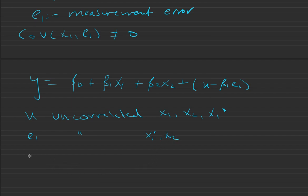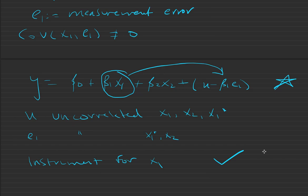We can instrument for x1 to help us with the endogeneity of x1, because in this expression x1 is correlated with the error term. We can fix that by instrumenting for x1.